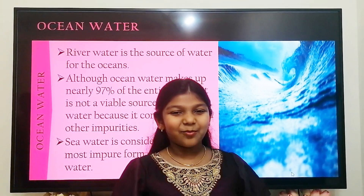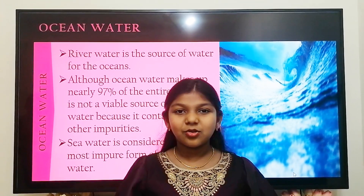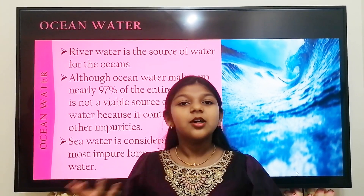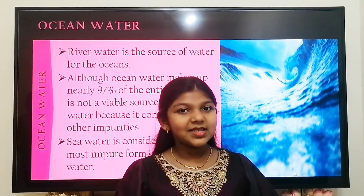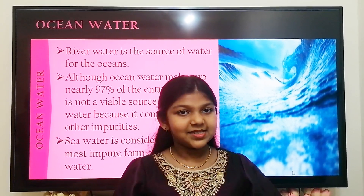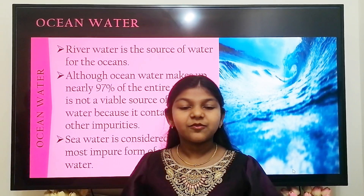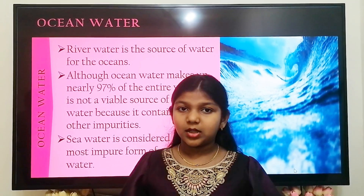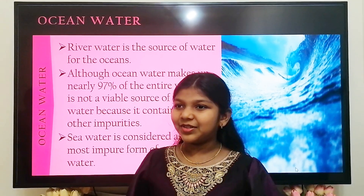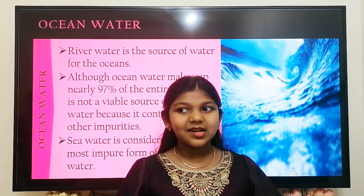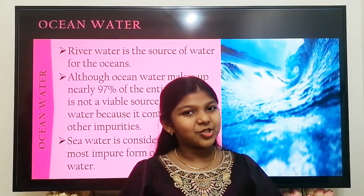Next, we are going to see about ocean water. River water is a source of water for the oceans. Although oceans make up 97% of the entire water in the world, it is not a viable source of potable water as it contains salt and other impurities. Sea water is considered as the most impure form of natural water.